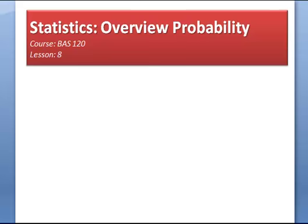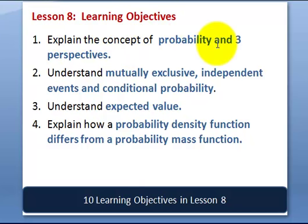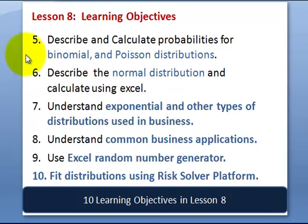I'm going to walk you through a brief overview of probability, lesson number eight. We're going to explain what probability is from three different perspectives, cover concepts of mutually exclusive versus independent events, conditional probability, expected value, and the difference between a density function and a mass function. Then we'll get into binomial, Poisson, normal, and exponential distributions.